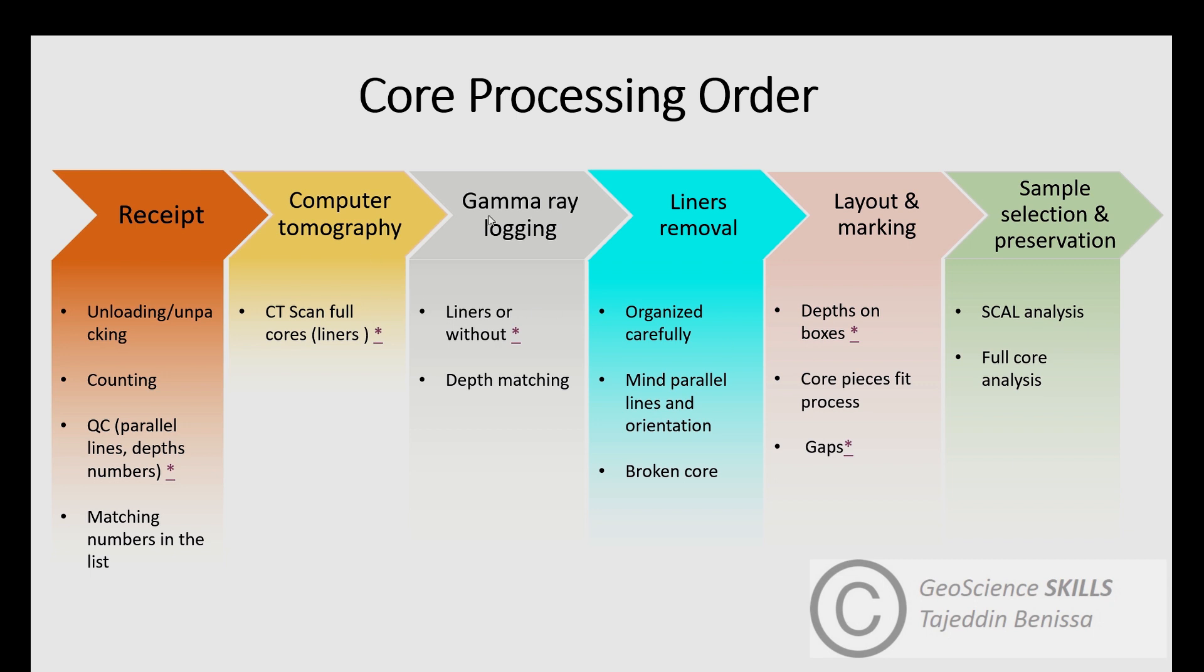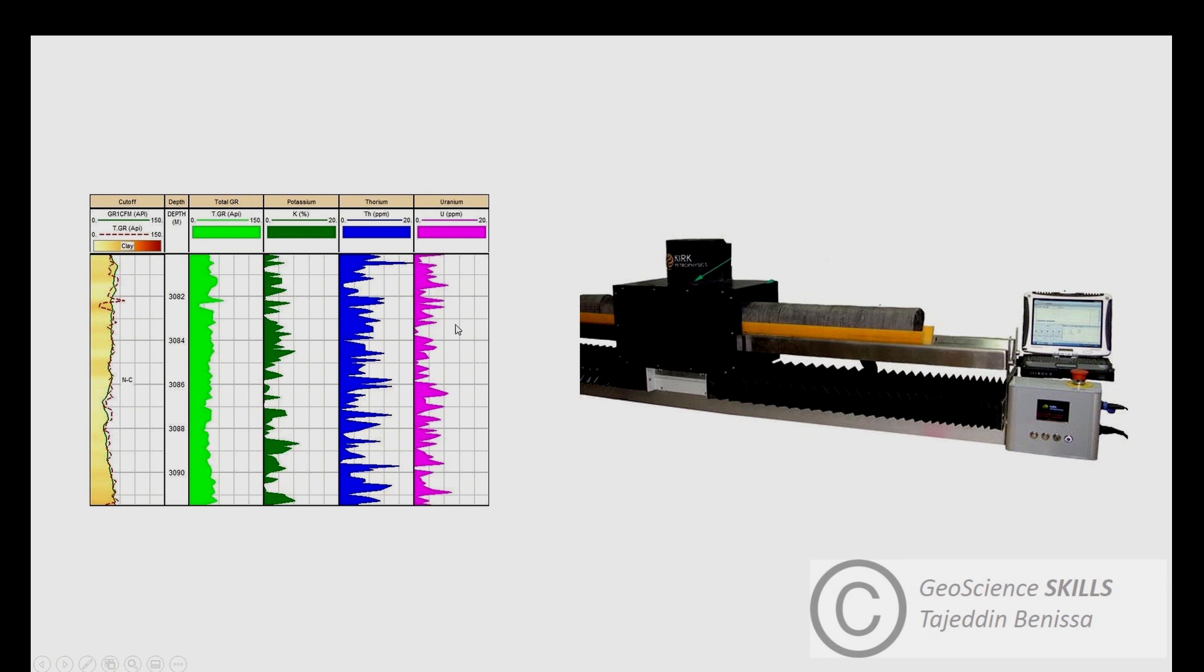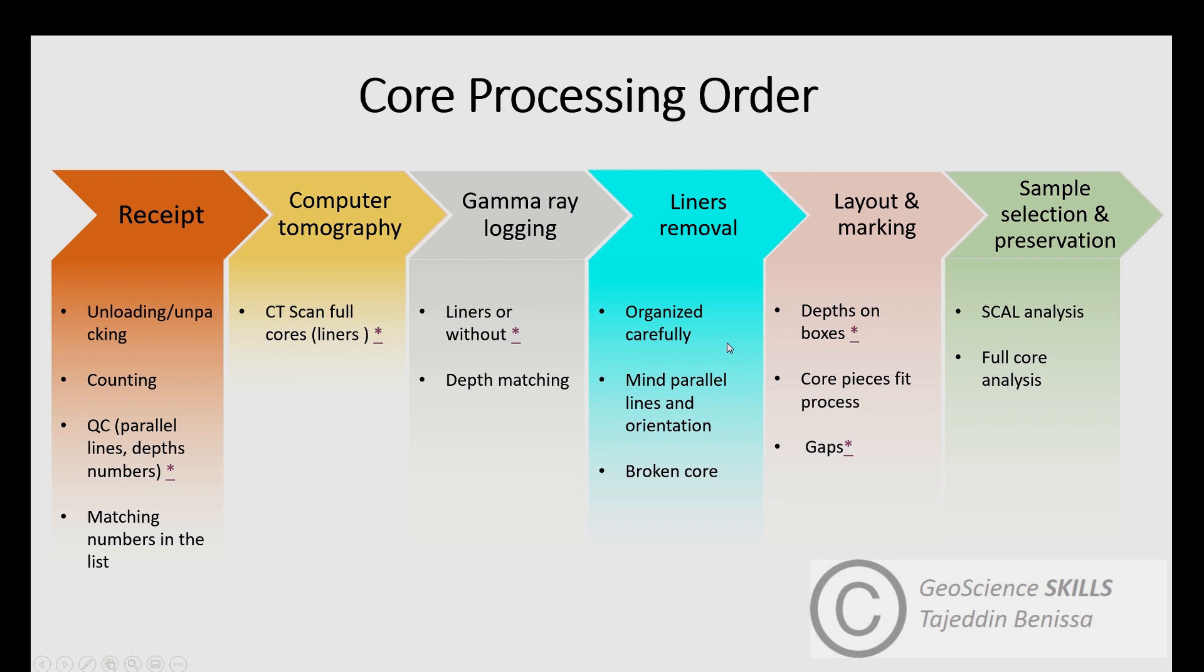Next is core gamma ray logging. Logging is done by using a certain machine to detect the radioactive content of the rock of the core. It's preferred to be applied on core samples when in liners or barrels to preserve original fluids, but can still be done without. Core gamma ray logging assists to set the core at the right depth in geological well section by doing core-log depth matching.